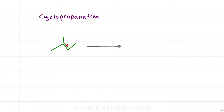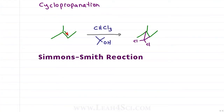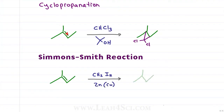In cyclopropanation we break the pi bond to form a three-membered ring of cyclopropane. The first method is the haloform with a carbene intermediate, where we react a haloform such as CHCl3 in the presence of tert-butanol to get a three-membered ring with chlorine on the new carbon. In the Simmons-Smith reaction we see a carbenoid, where CH2I2 and a zinc-copper catalyst gives us the cyclopropane.